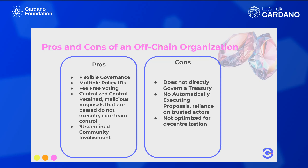The cons are that off-chain organizations do not directly govern a treasury. After a vote, it doesn't automatically execute to spend treasury funds or update governance parameters — it's really just a way to gather community sentiment. You always have to have some actor, maybe a multi-sig or a benevolent dictator, that acts on the community's behalf. There are no automatically executing proposals, so you do have a reliance on trusted actors, and it's not optimized for decentralization.